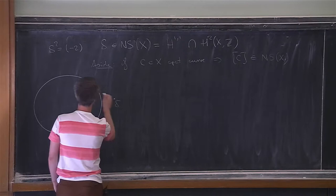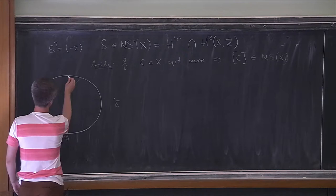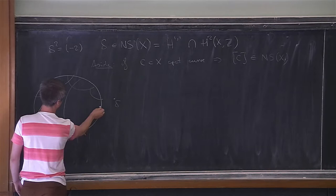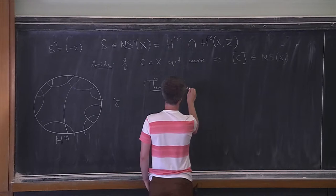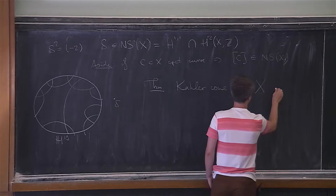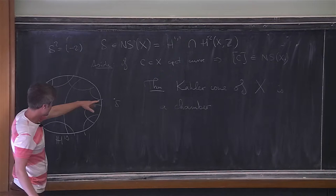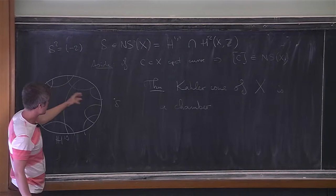If we had a delta outside, it determined a hyperplane. As you took the union of all such possible hyperplanes, you get a picture of disconnected chambers. For each delta you draw one of the hyperplanes, and it separates hyperbolic space into two different pieces.